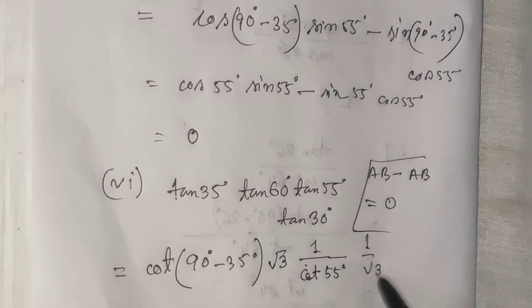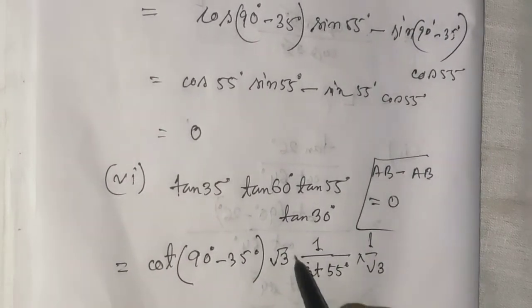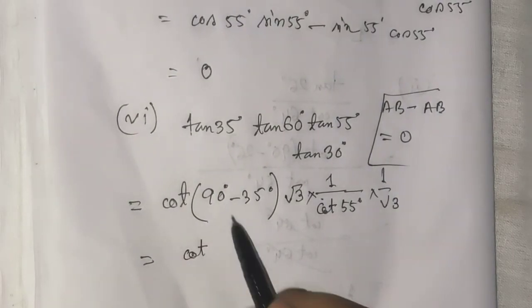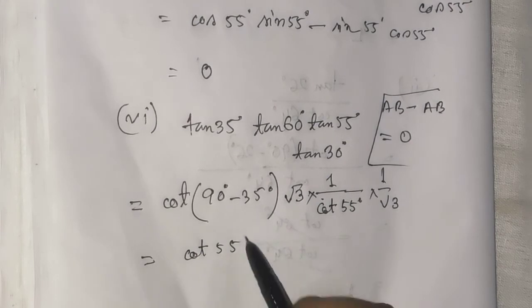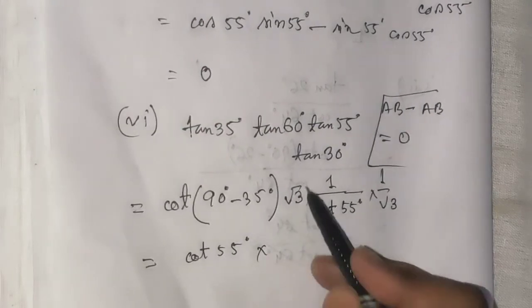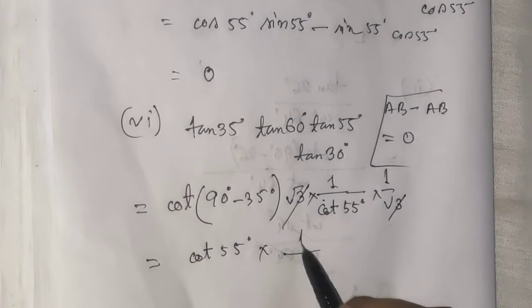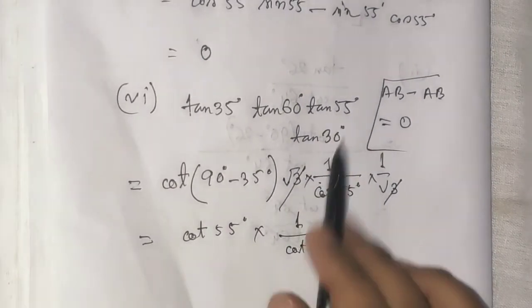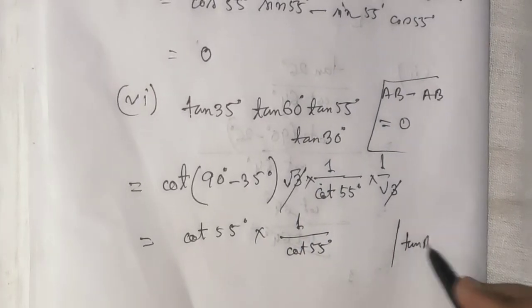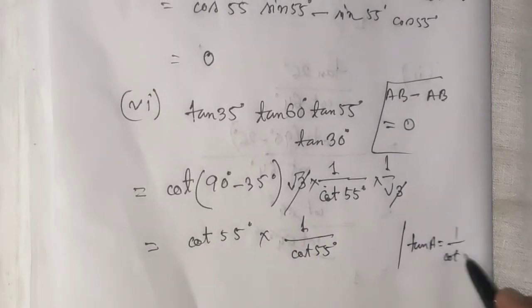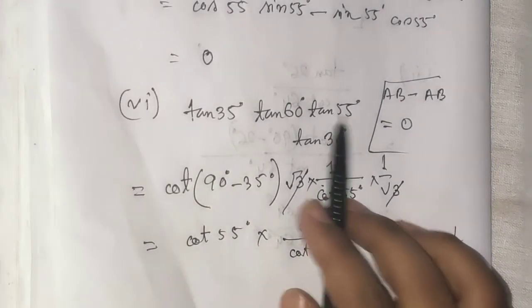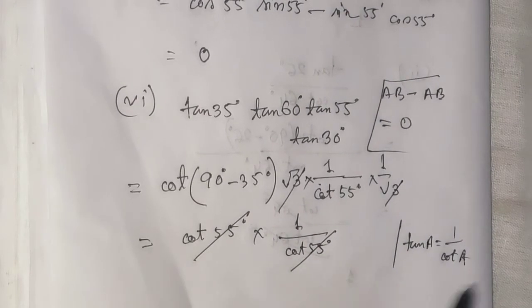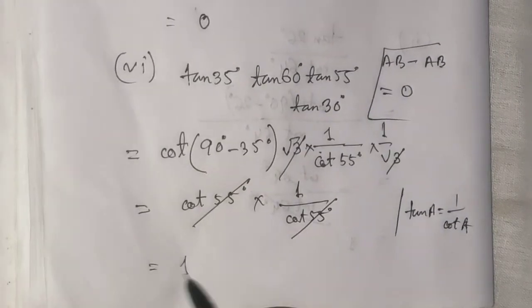So tan35° × tan55° equals 1, since tan(90° - A) × tanA equals 1. And tan60° × tan30° equals √3 × (1/√3) equals 1. So the whole product equals 1.